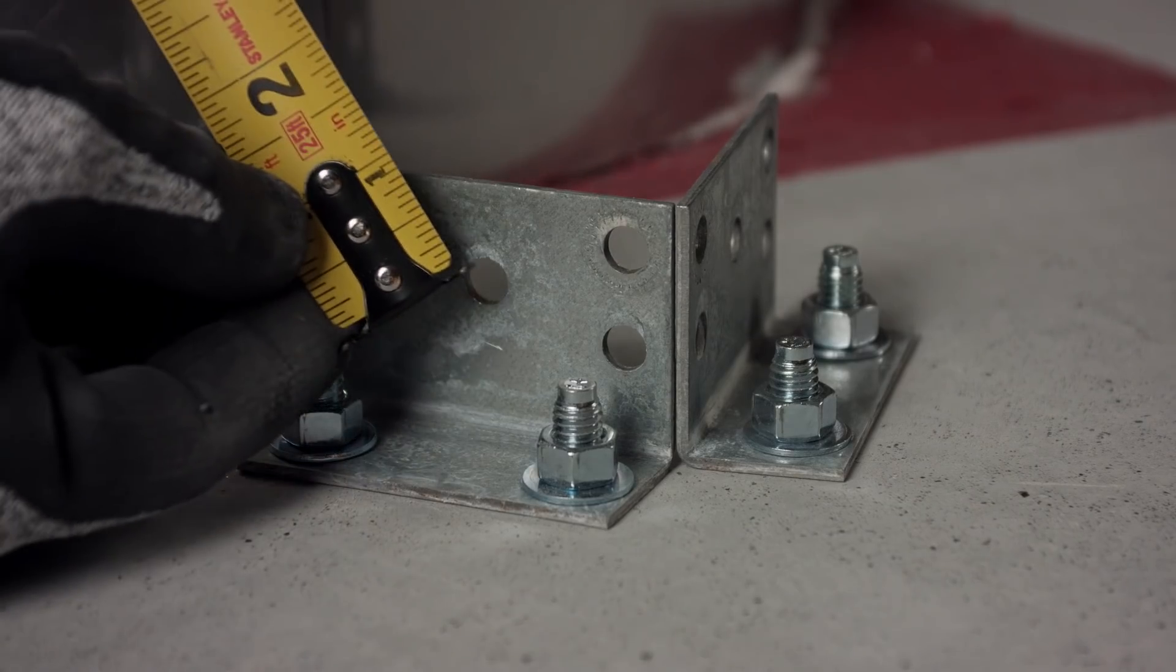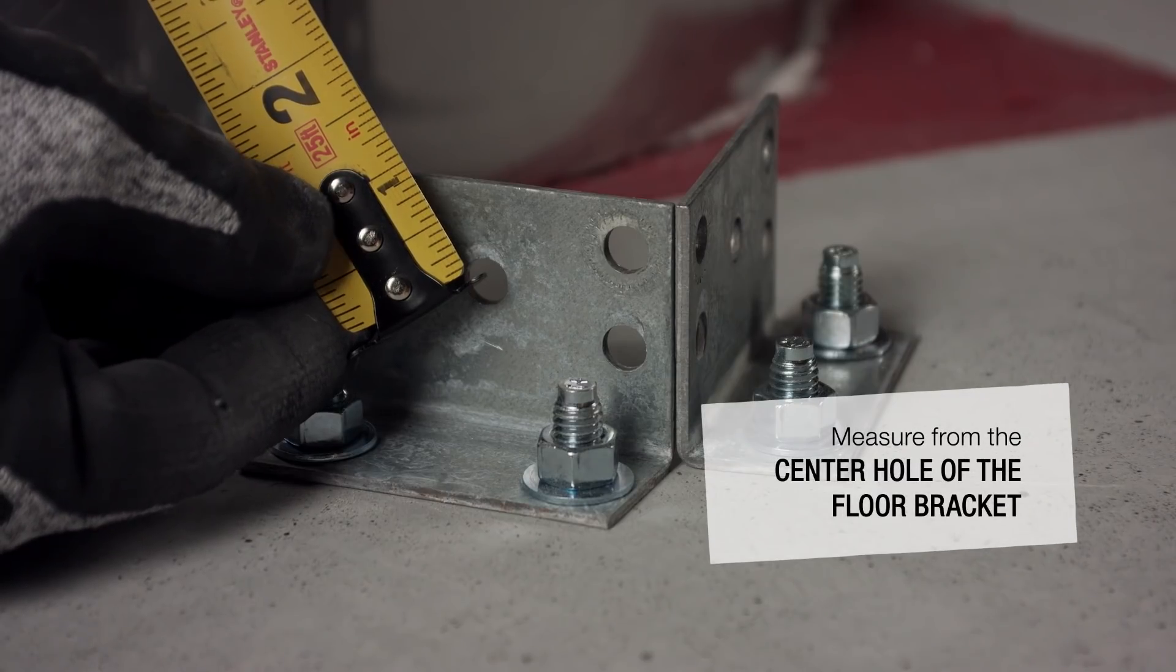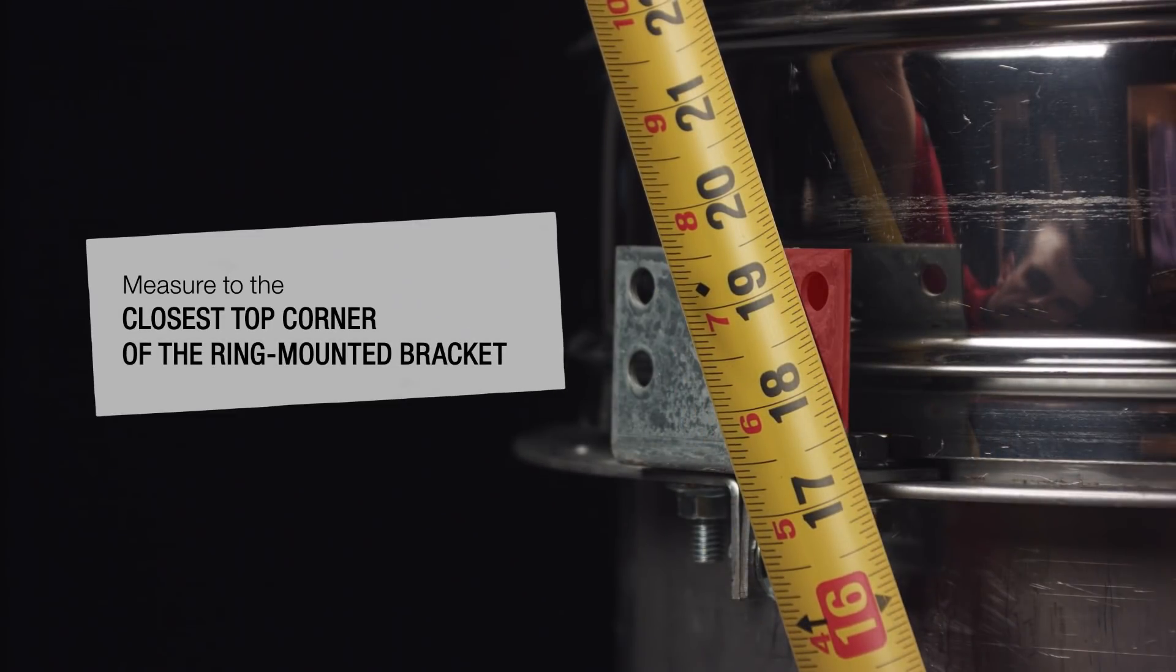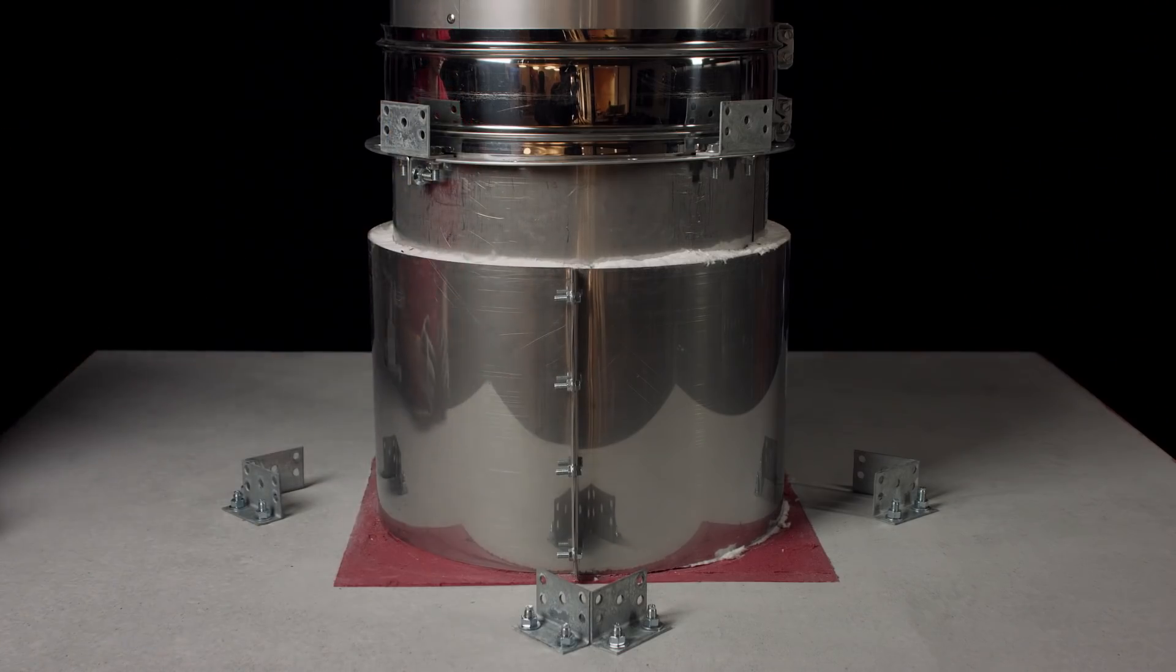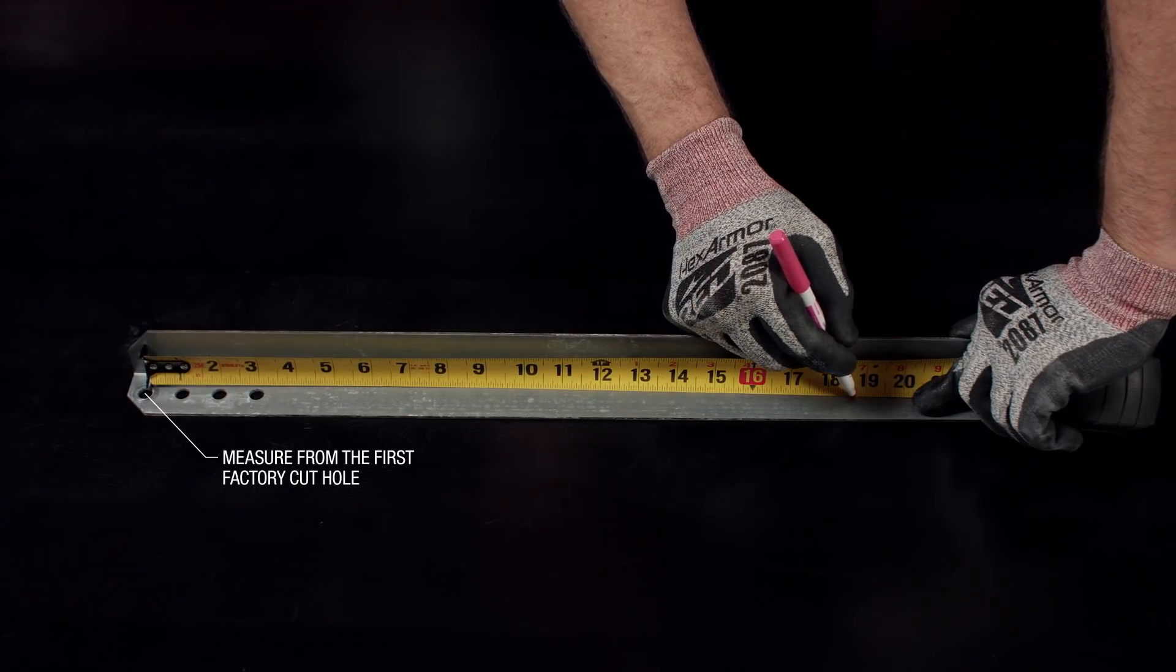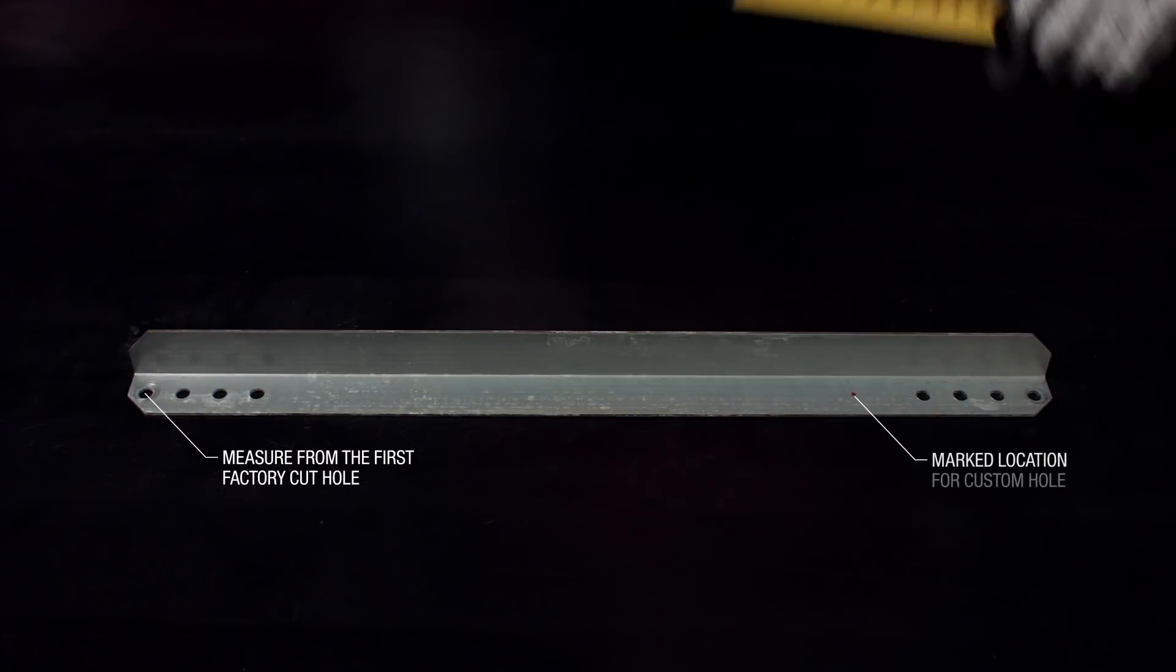More specifically, you should measure from the center hole of the floor bracket to the closest top corner of the ring-mounted bracket. You will then use this measurement to mark the spot for one custom hole in each of the support legs, starting from the first factory cut hole.